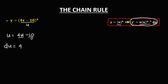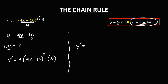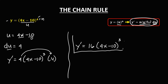Using the formula to find the derivative: y prime equals n, and the exponent n is 4, times u which is (4x minus 10), to the power n minus 1, so 4 minus 1 equals 3, times the derivative of u which is 4. Simplifying: 4 times 4 is 16, so y prime equals 16 times (4x minus 10) to the power 3. This is the derivative.